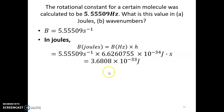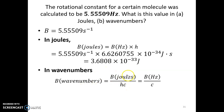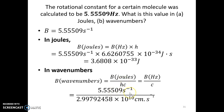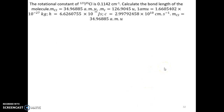To convert B to wavenumbers, we divide B in joules by hc, or equivalently divide B in hertz by the speed of light. This straightforward conversion gives B in units of cm⁻¹.